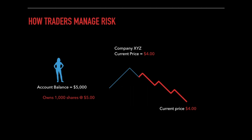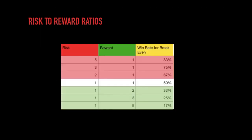Traders need their funds so they can keep trading and capitalizing on opportunity to produce income. So how is it possible to make money if 50% of the time traders find themselves in a losing position? This is where proper risk management comes in. Just like diversification is the key to managing risk for investors, risk-to-reward ratios are the key to managing risk for traders.